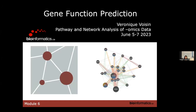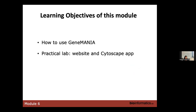We are going to start Module 5, which is going to use the GeneMania application. This module is called Gene Function Prediction, and it was linked to a pre-recorded video that had all the details about the theory behind GeneMania.